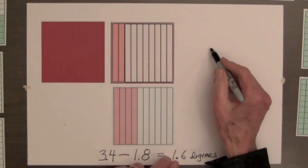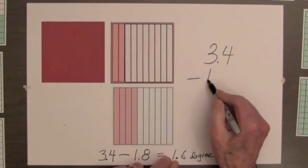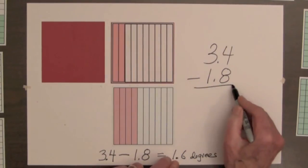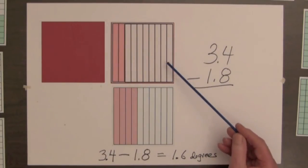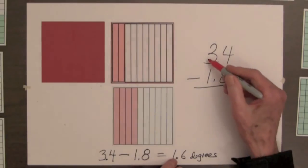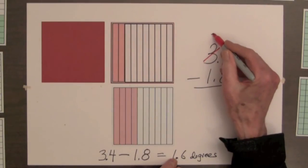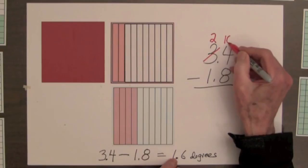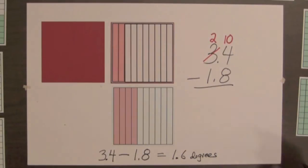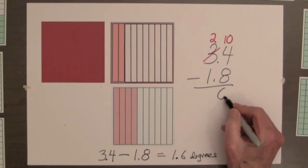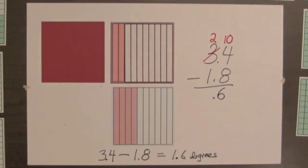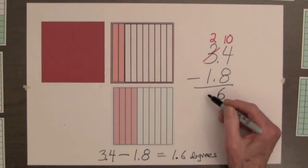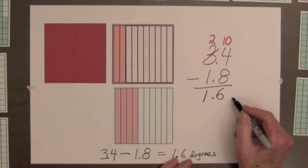Let's look at the algorithm for subtracting these decimals. With the squares, we first replaced one unit by ten tenths. In the algorithm, we regroup one unit, leaving two units. In the tenths column, we have fourteen tenths, and we subtract eight tenths from the fourteen tenths. With the squares, we removed one unit square from the two remaining; in the algorithm, we subtract one from two to obtain one point six degrees.